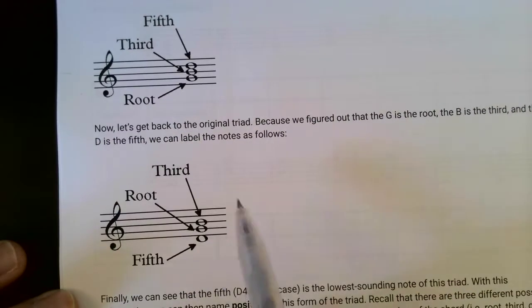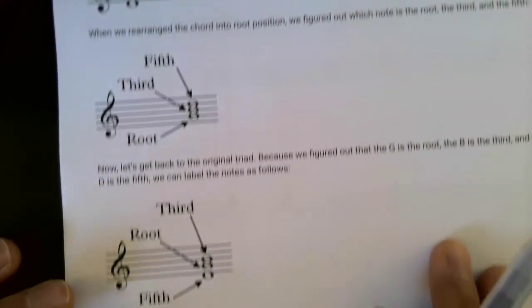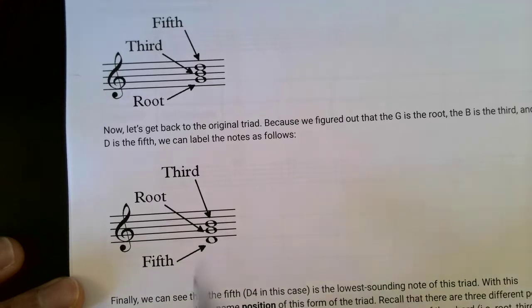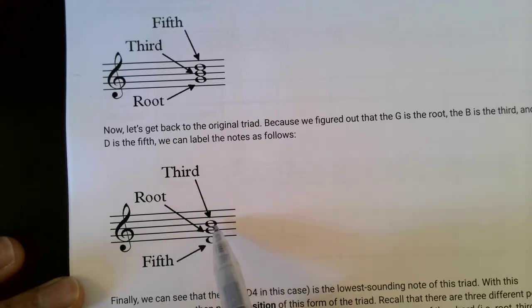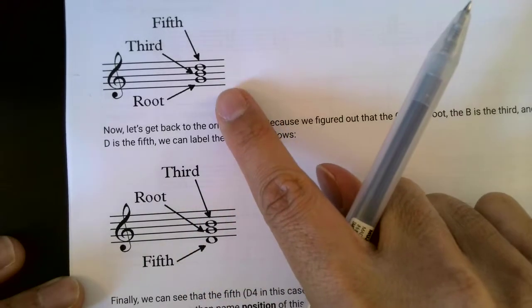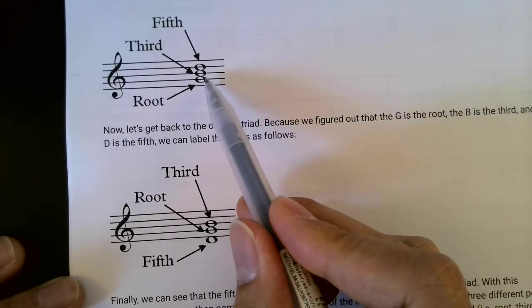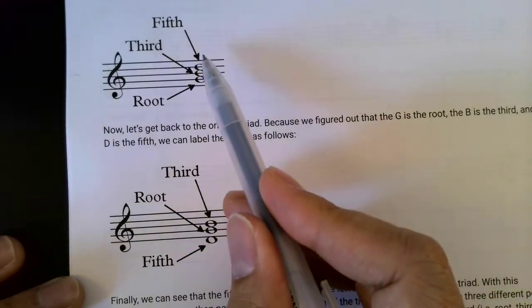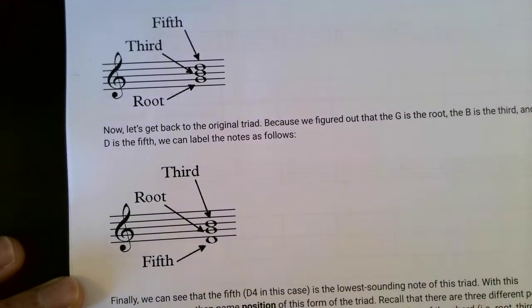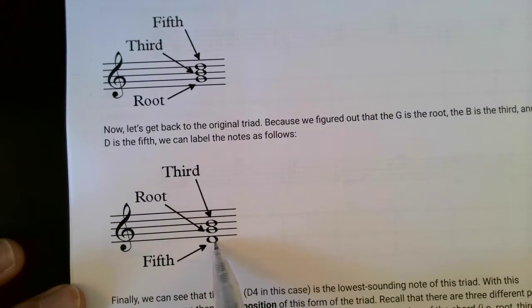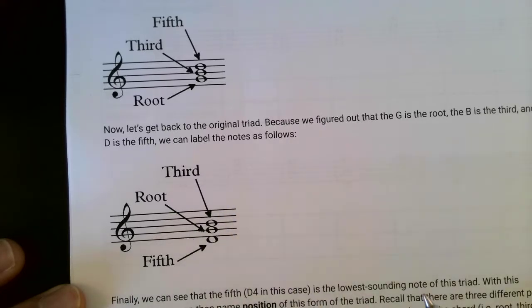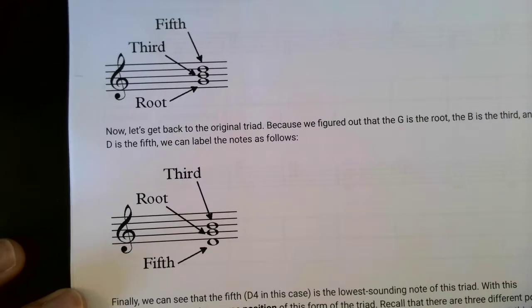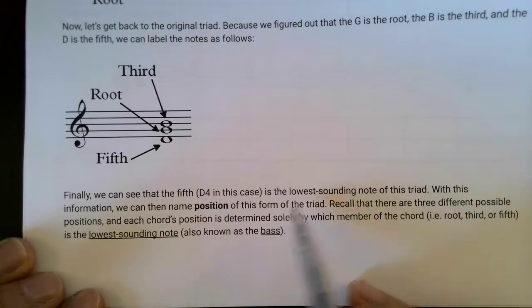When we get back to the original triad — the original position with the D in the bottom, D4 — we can still look at the same names for D. The D is the fifth of this chord, the G is the root, and the B is the third. These names come from the root position. Once we put it into root position, we know that G is the root. Any other position for this chord, no matter where the G is — up here, down here, or even an octave lower — it will always be the root. That's why here, even though the D is below the G in this formation of the chord, it is still the fifth, because we determined that D is the fifth of this triad. So we can see that the fifth is the lowest sounding note.